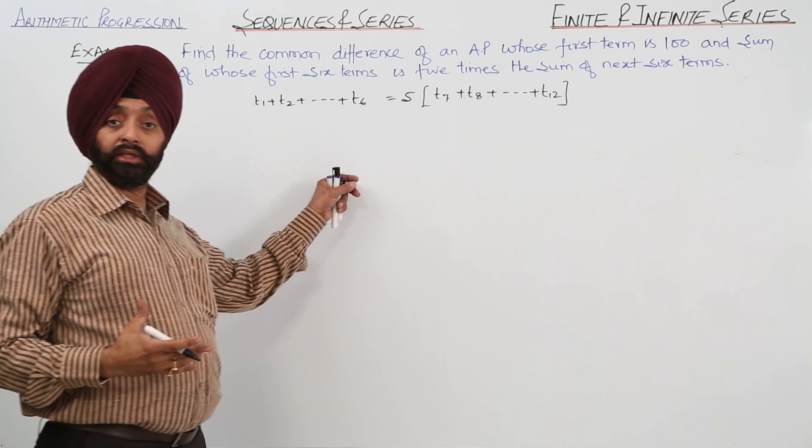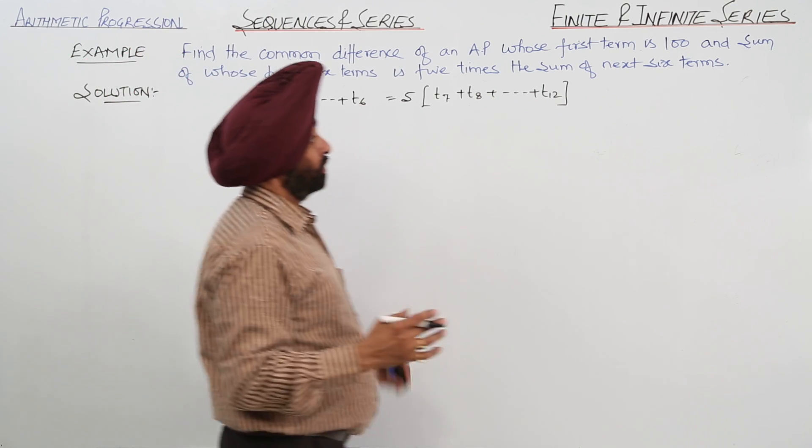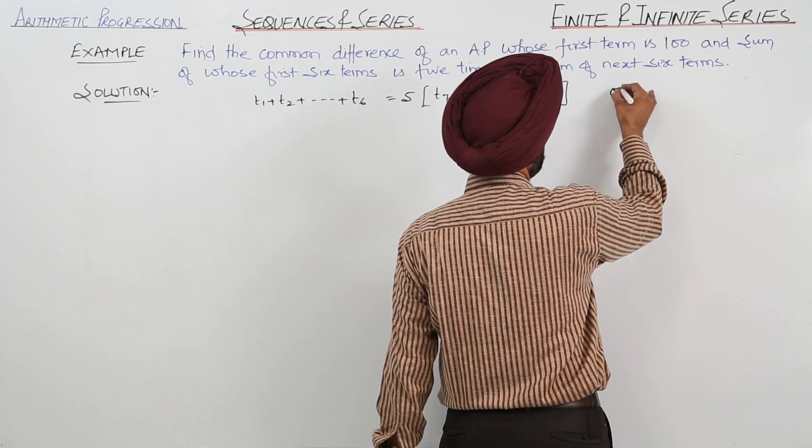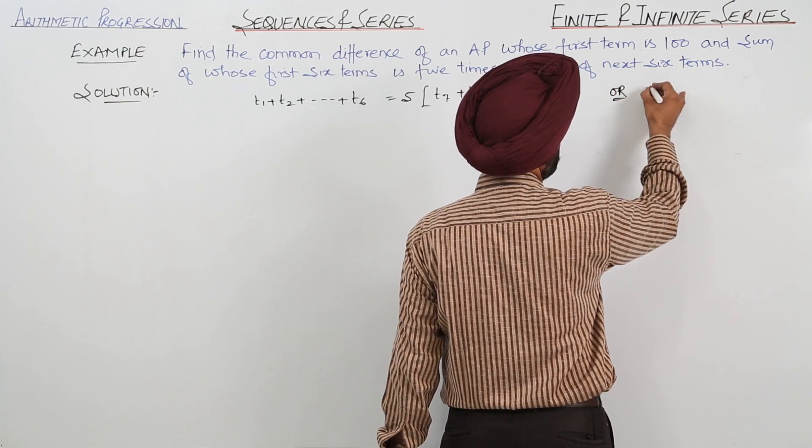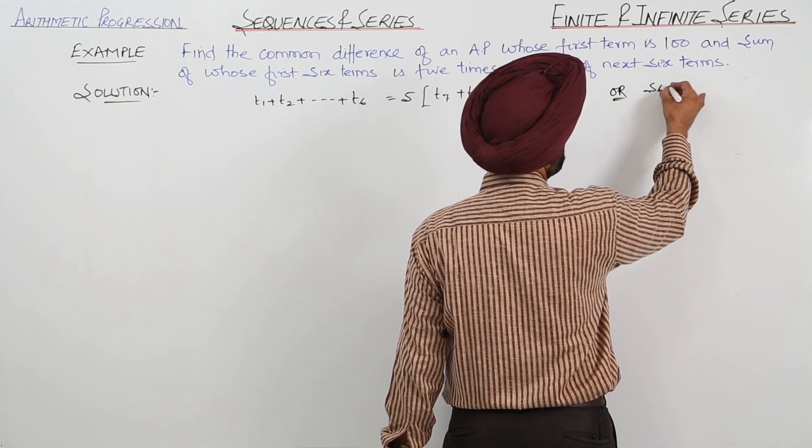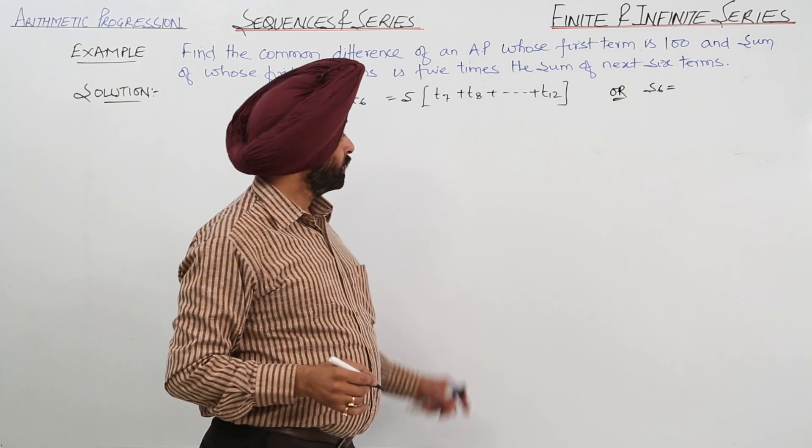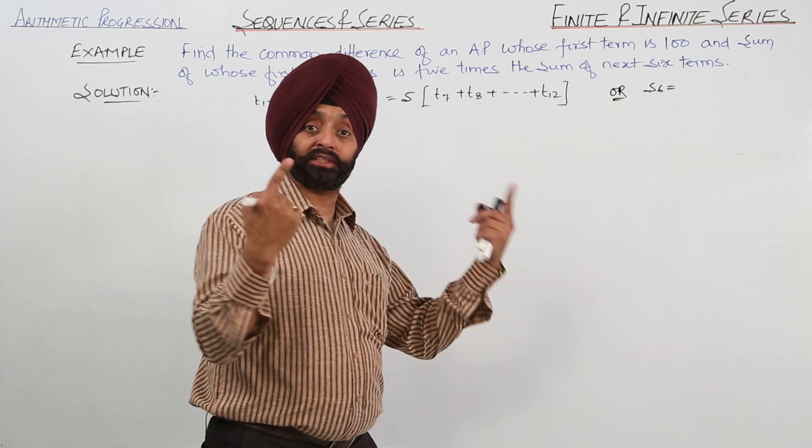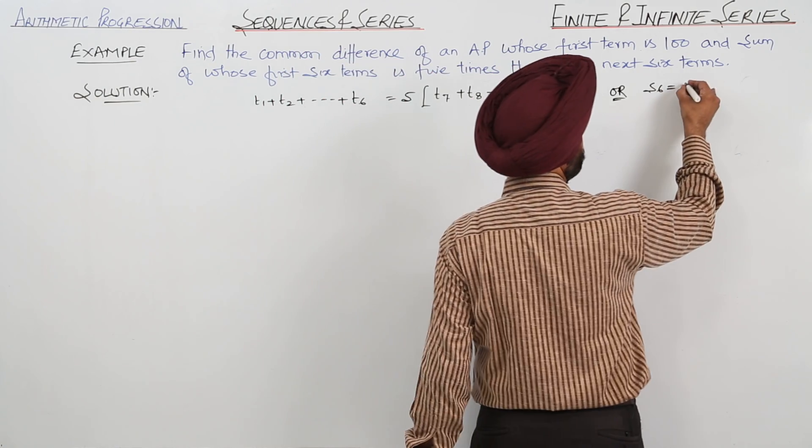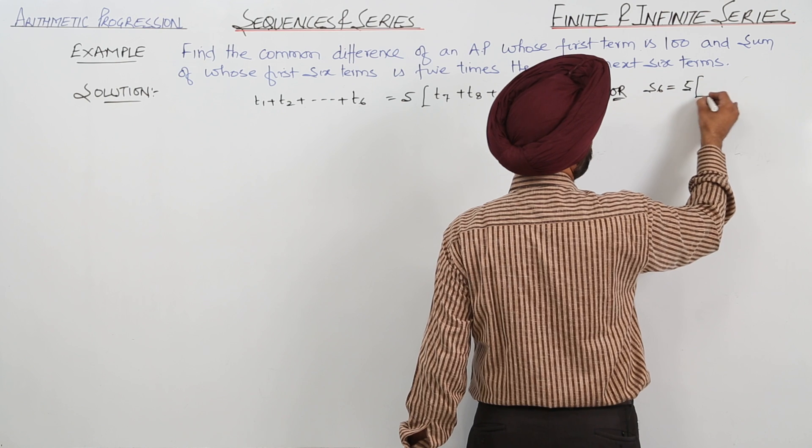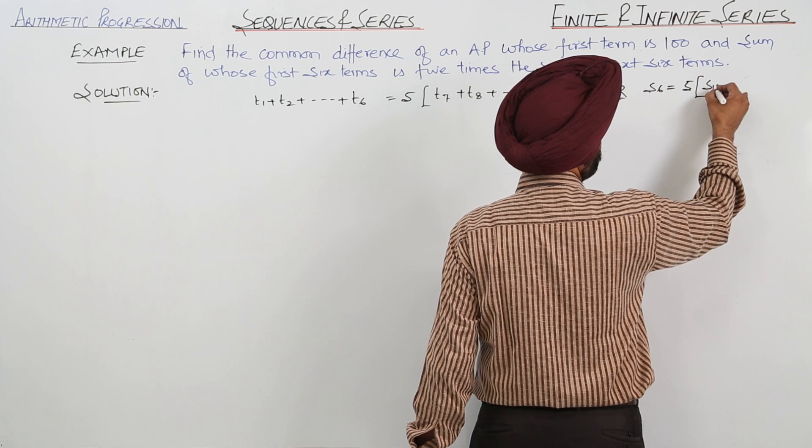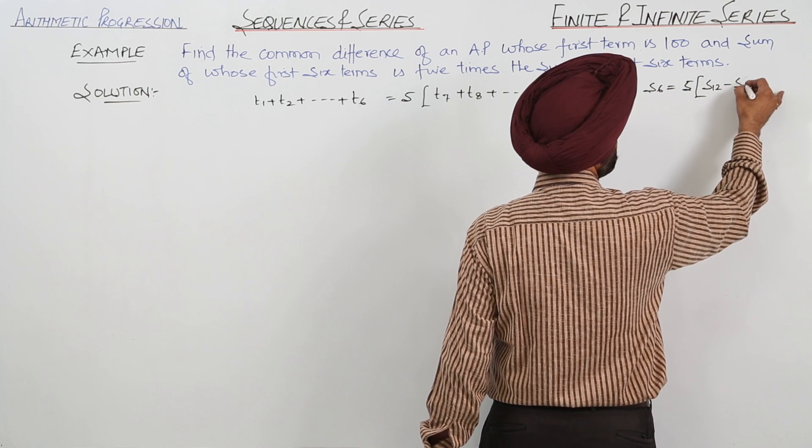Now this is the easiest way. Or what you can do is you can write it that sum of first 6 terms, S6, is equal to 5 times next 6 terms. We can write it as 5 times—now next 6 terms will be S12 minus S6.